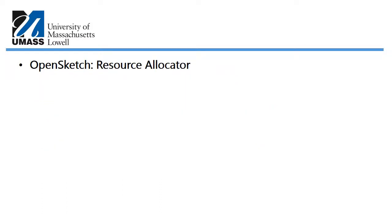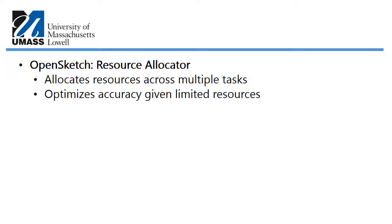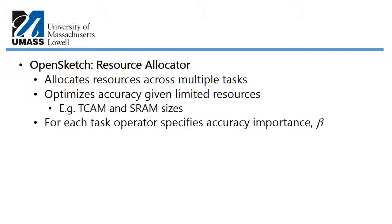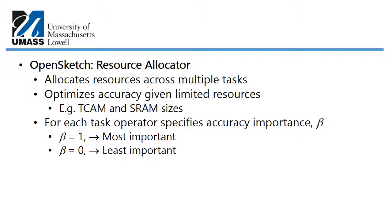The resource allocator divides switch memory resources across different measurement tasks and optimizes accuracy given limited resources such as TCAM and SRAM sizes. For each task, the operator specifies importance using a value called beta: beta equal to one means the task is most important for accuracy; beta equal to zero means least important. Beta can range from zero to one.